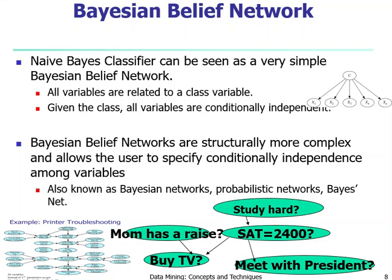We have learned Naive Bayes classifier before and it is related to Bayesian belief network. In Naive Bayes classifier, all variables are related to a class variable — those are the individual variables and the class variable could take any one of the class labels provided. The assumption is that given the class, all those variables are conditionally independent. This Naive Bayes classifier is actually a very simple Bayesian belief network with only two levels, with one class label that all other variables relate to.